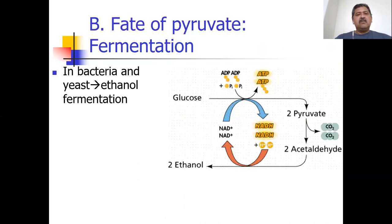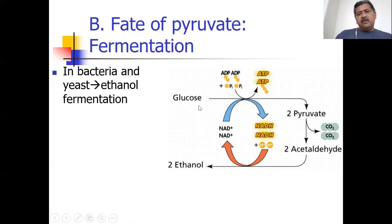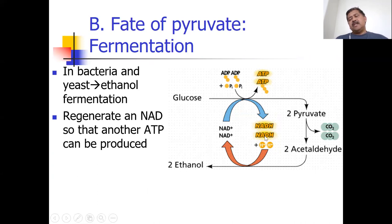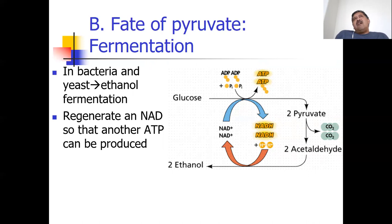At the end of glycolysis, in bacteria and yeast, in the absence of oxygen, they'll go ahead and continue processing chemical reactions to pick up more energy. In bacteria and yeast they'll form ethanol in a process called fermentation. They do this so that they can pick up another NAD. These NADHs are great — you get three ATPs for each — but if you can't get them to the inner membrane of the mitochondria, then it doesn't matter.